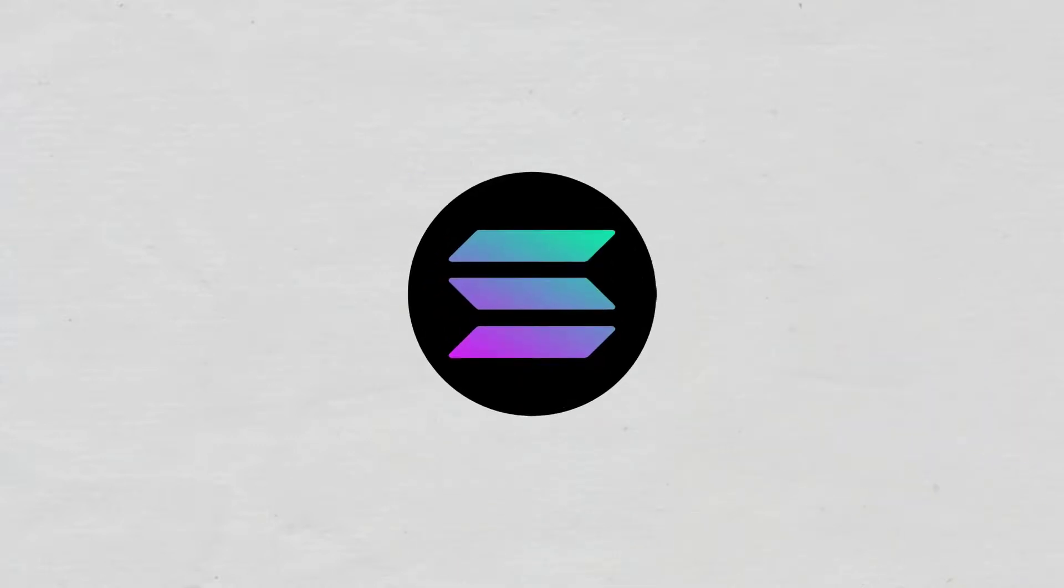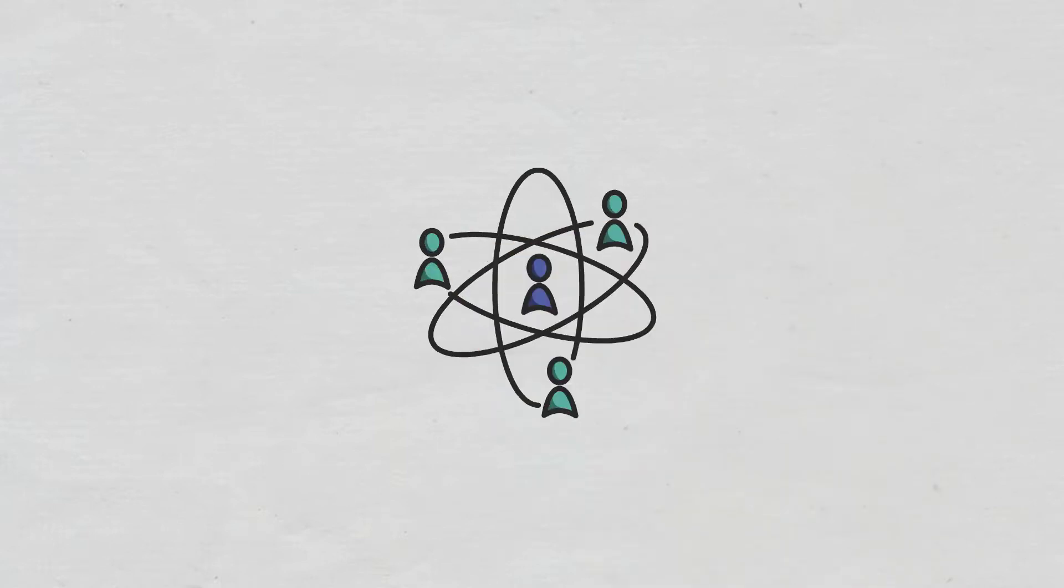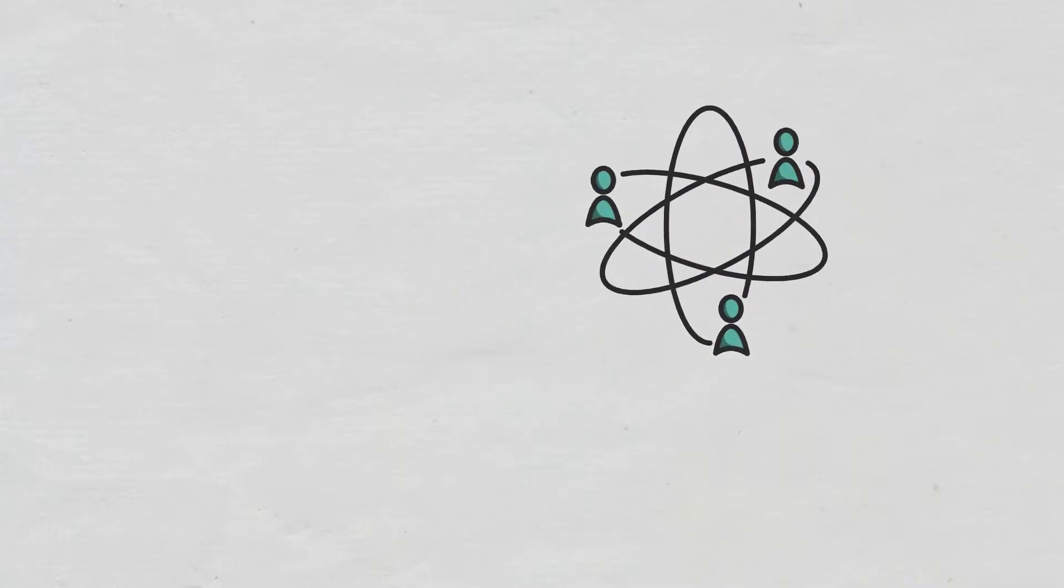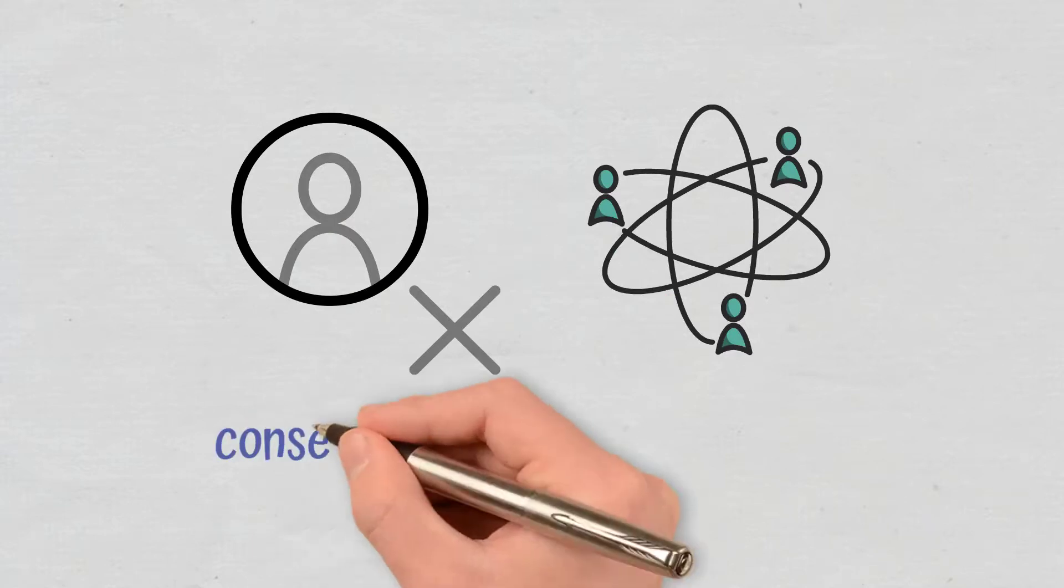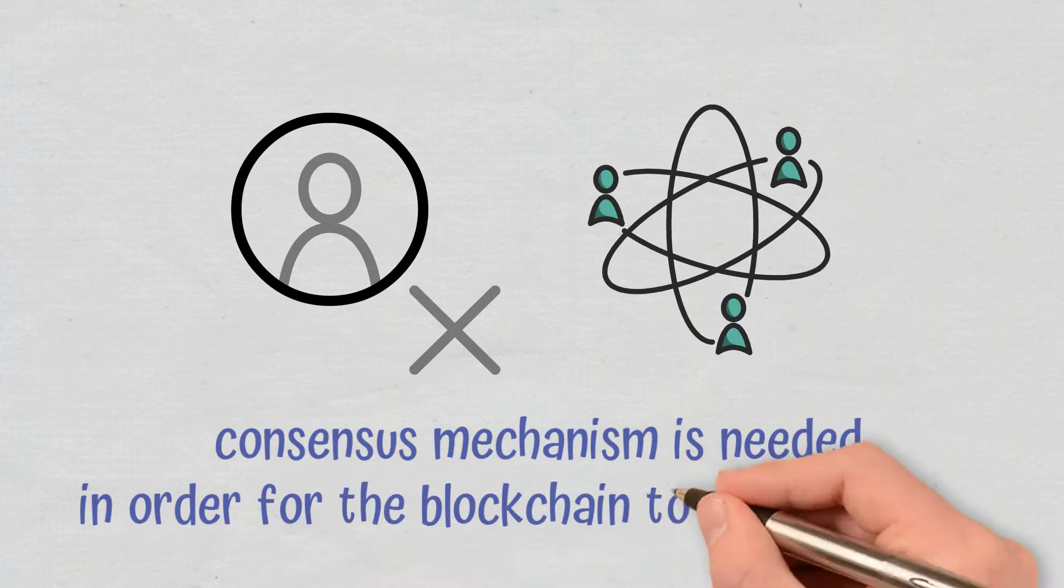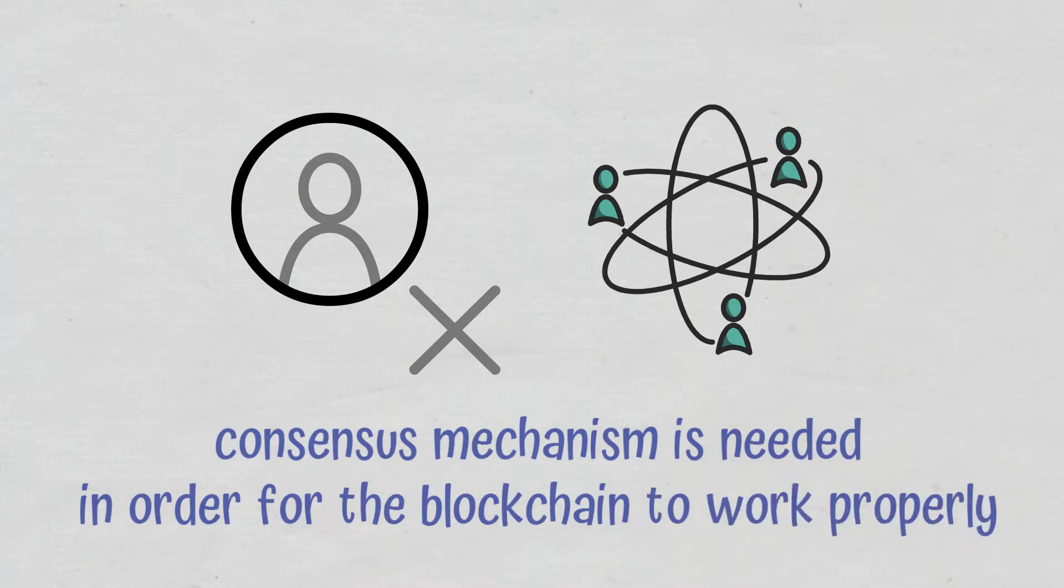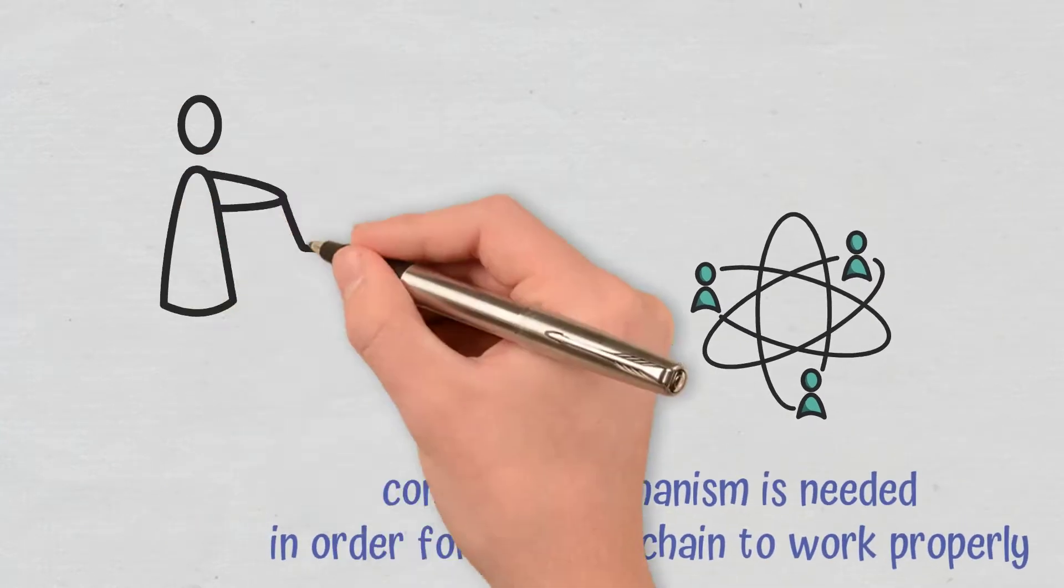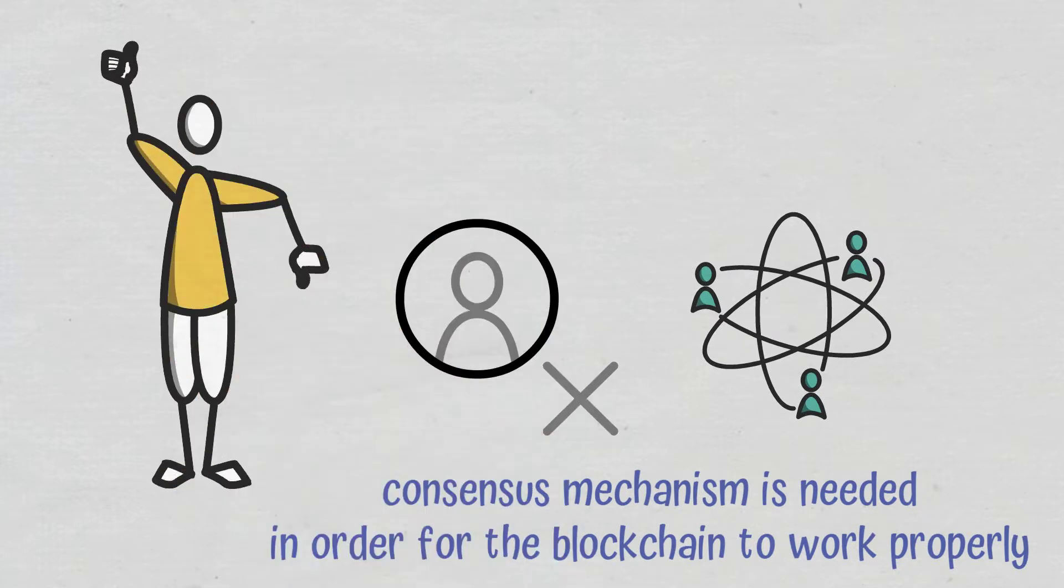Solana is an example of Proof of History. In conclusion, since public blockchains operate in a decentralized manner, there is no authority figure, which means that a consensus mechanism is needed in order for the blockchain to work properly. There are several methods of doing that, each with their pros and cons.